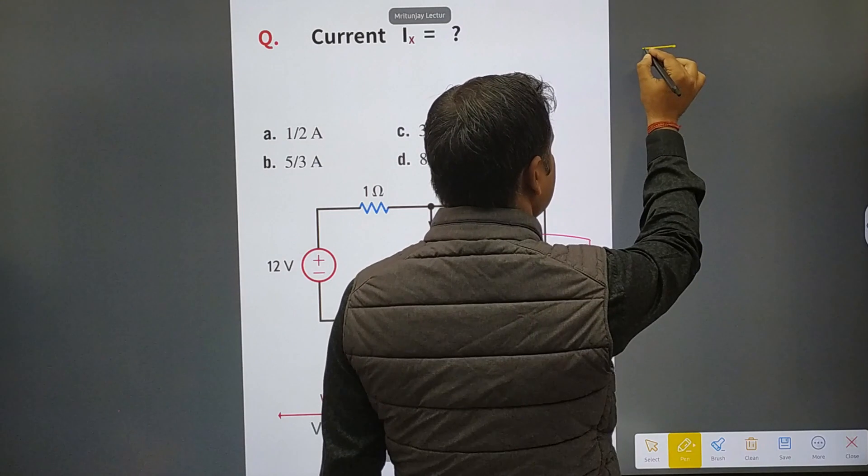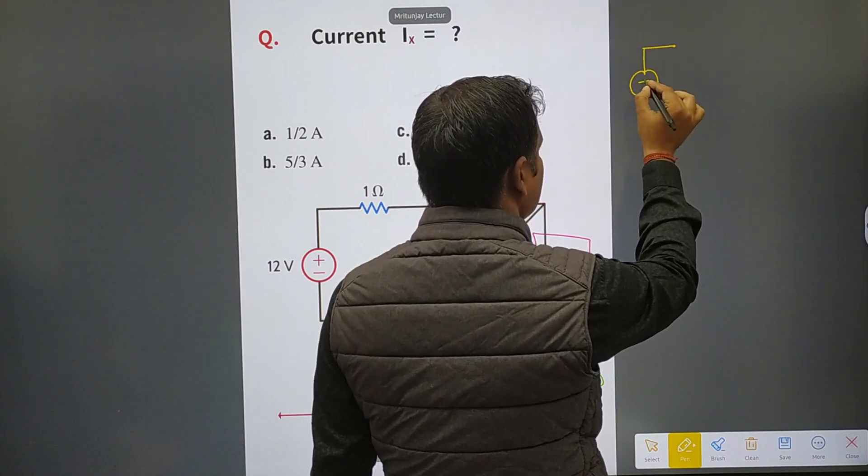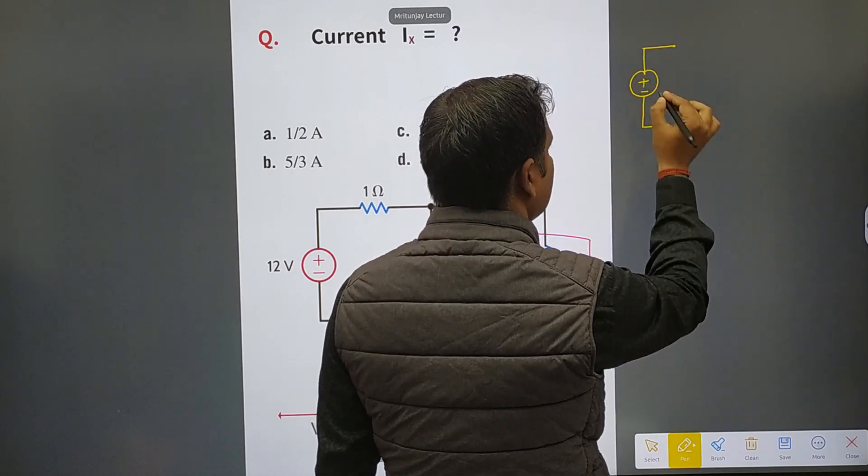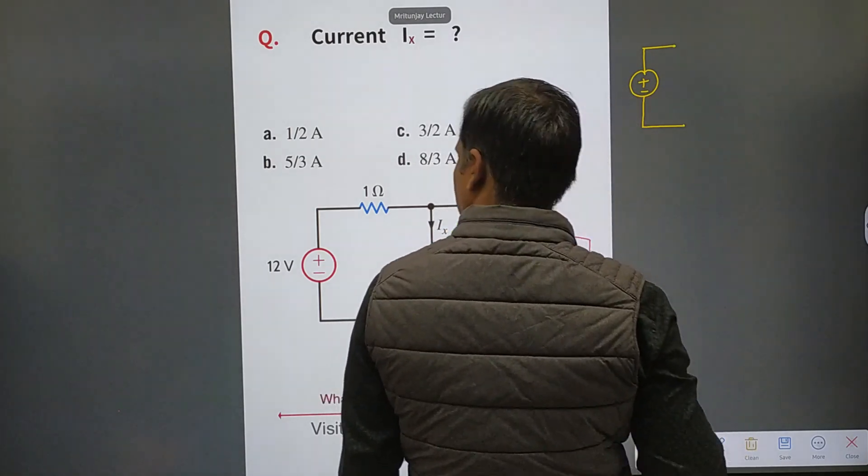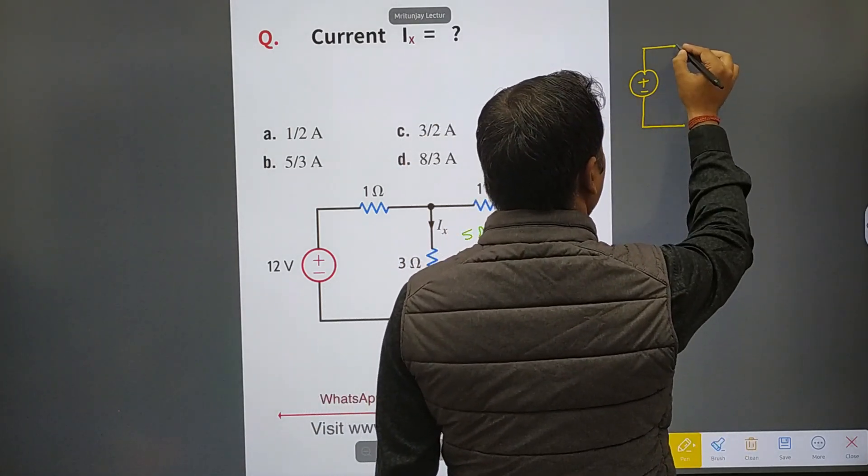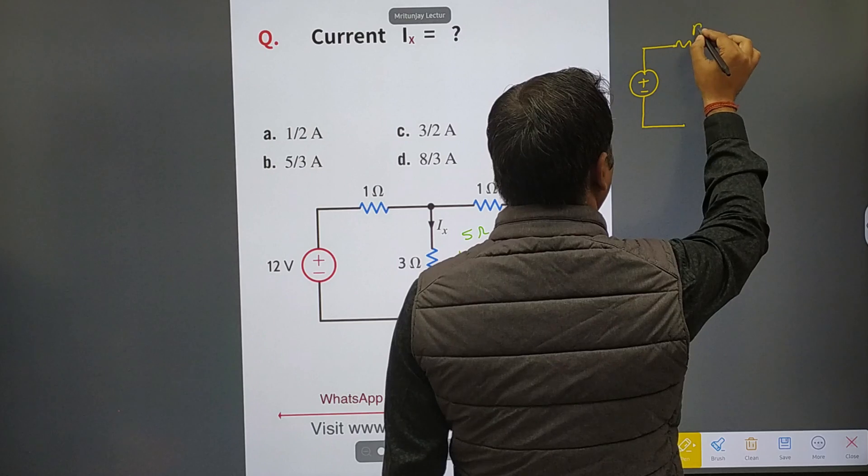I know that using here source transformation. What about source transformation? Voltage and resistance given like that one.